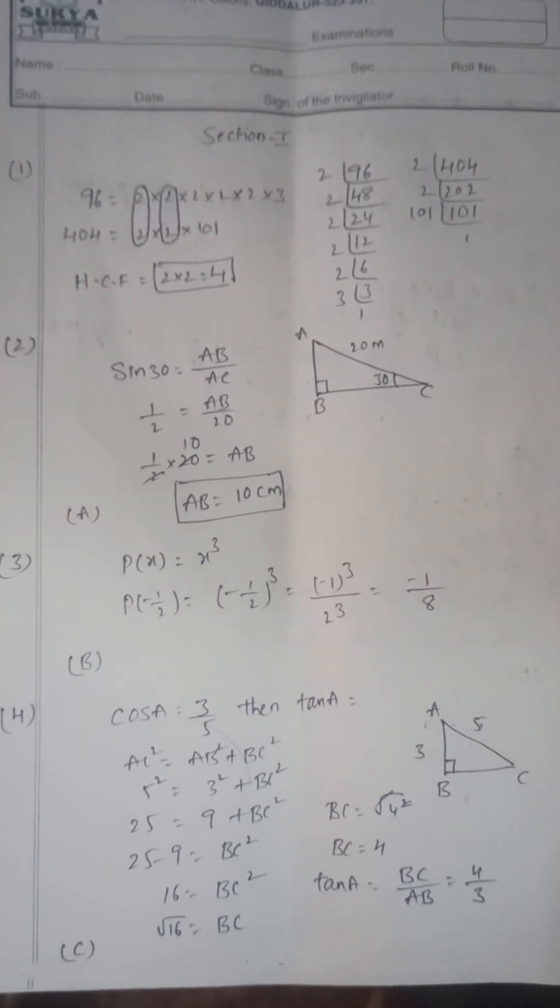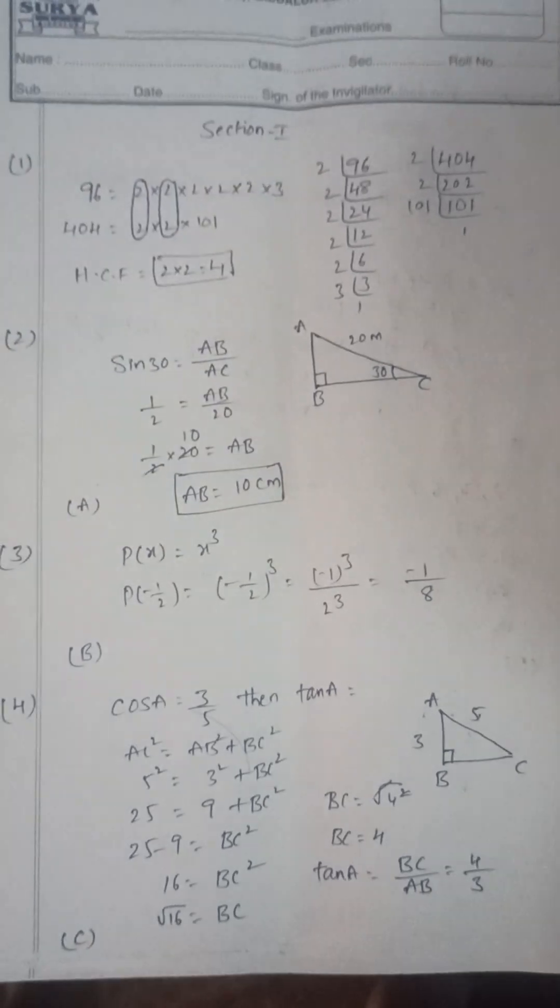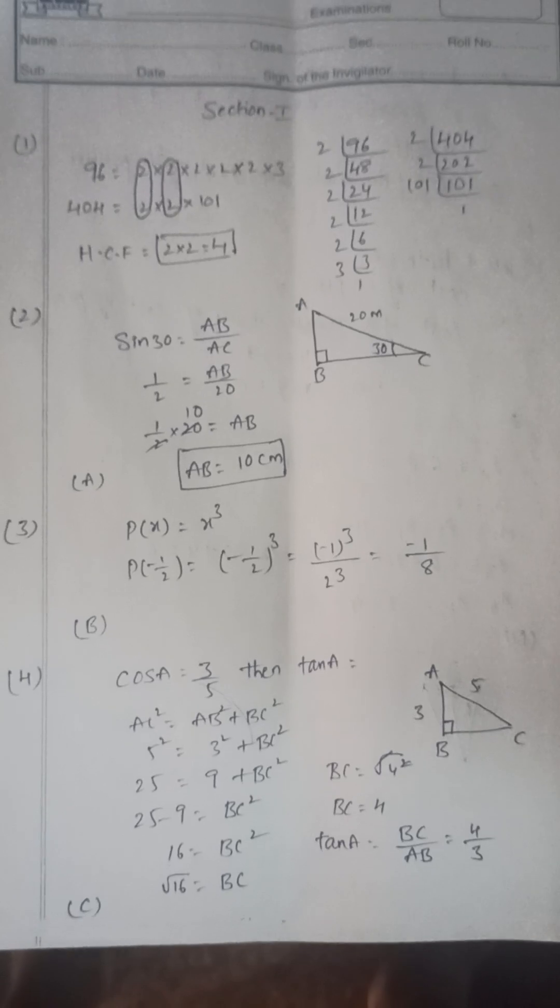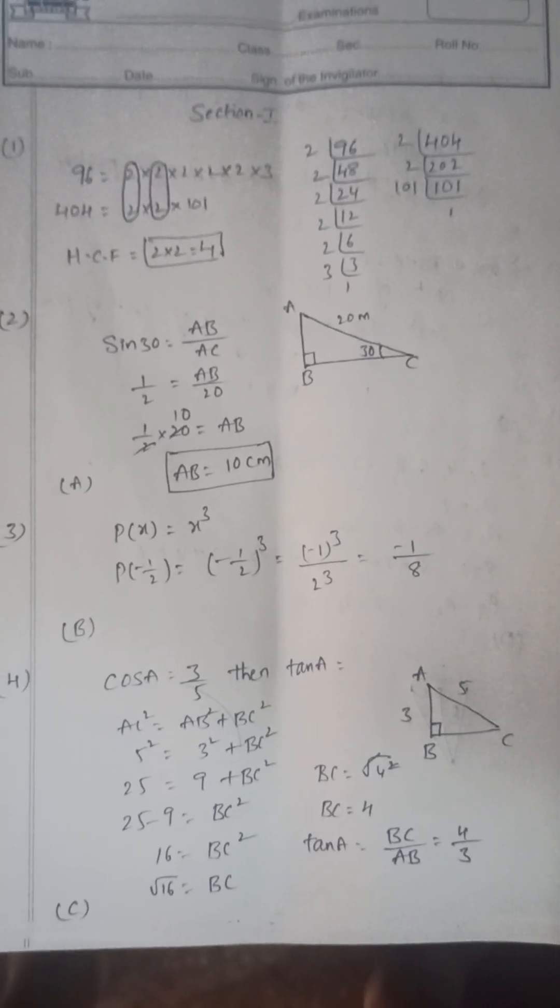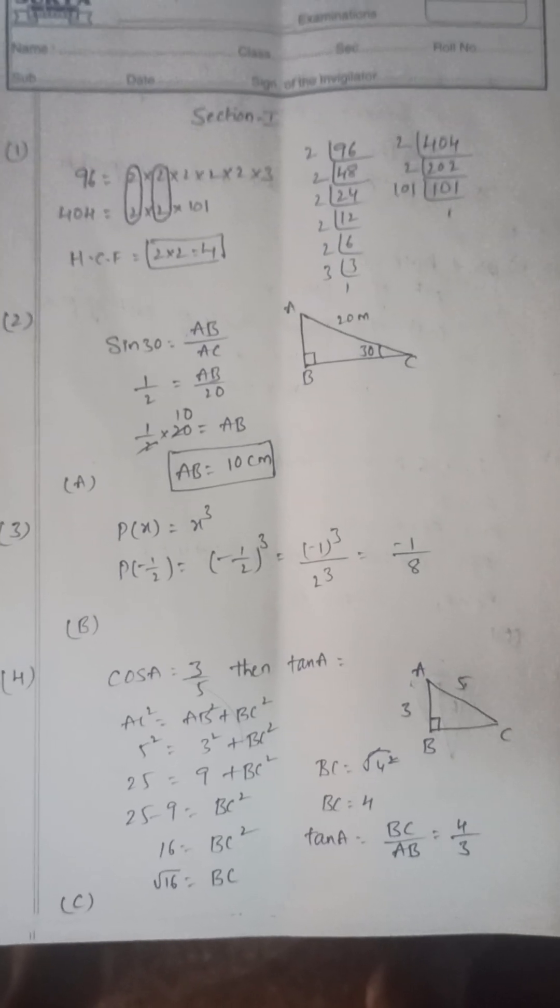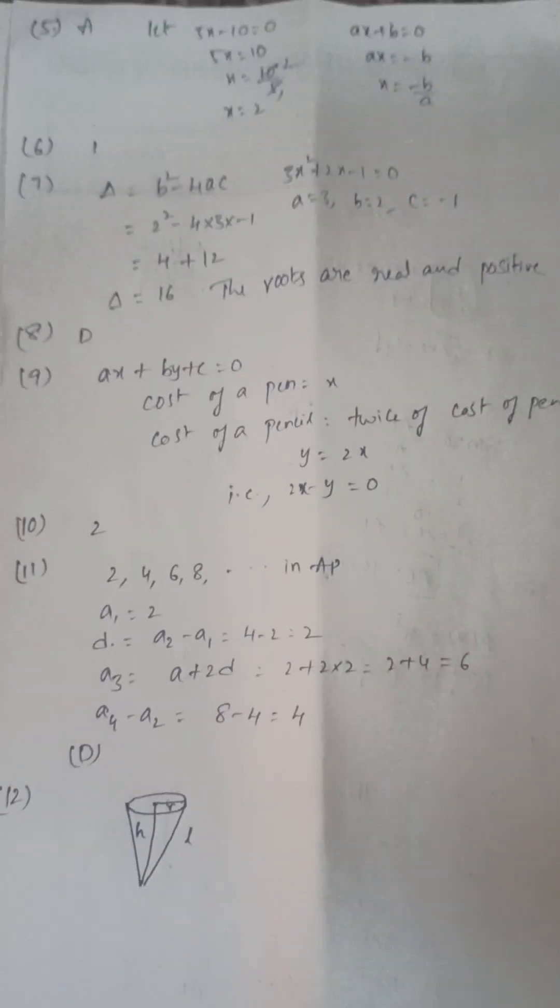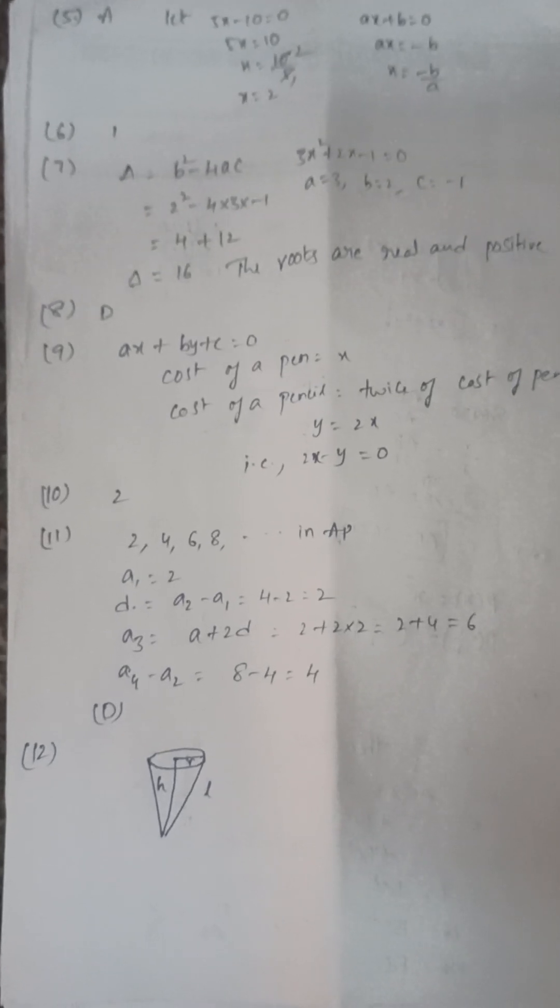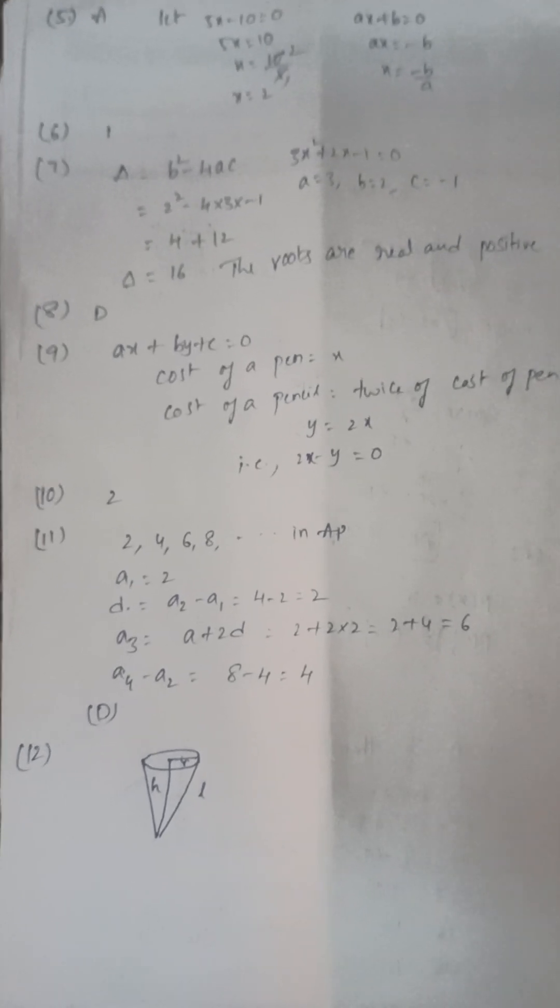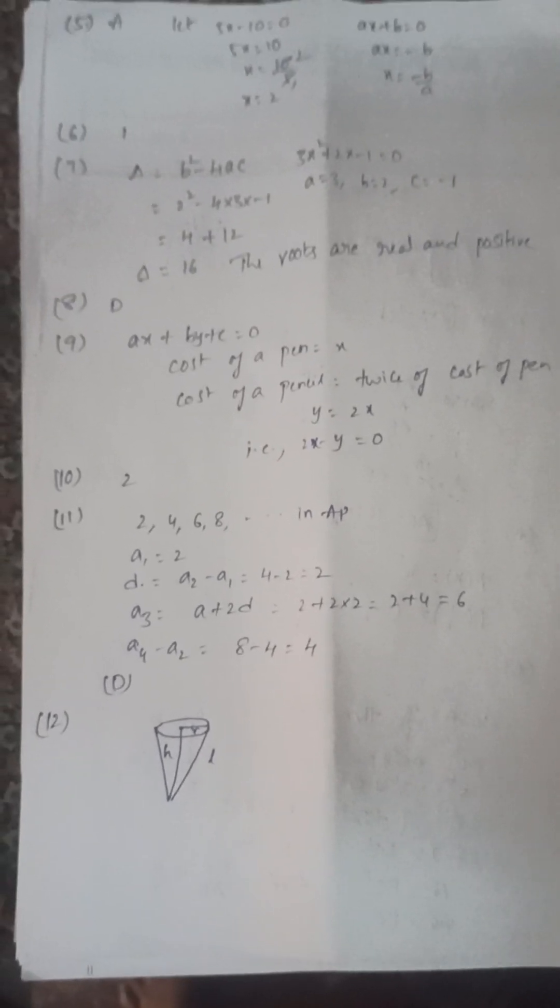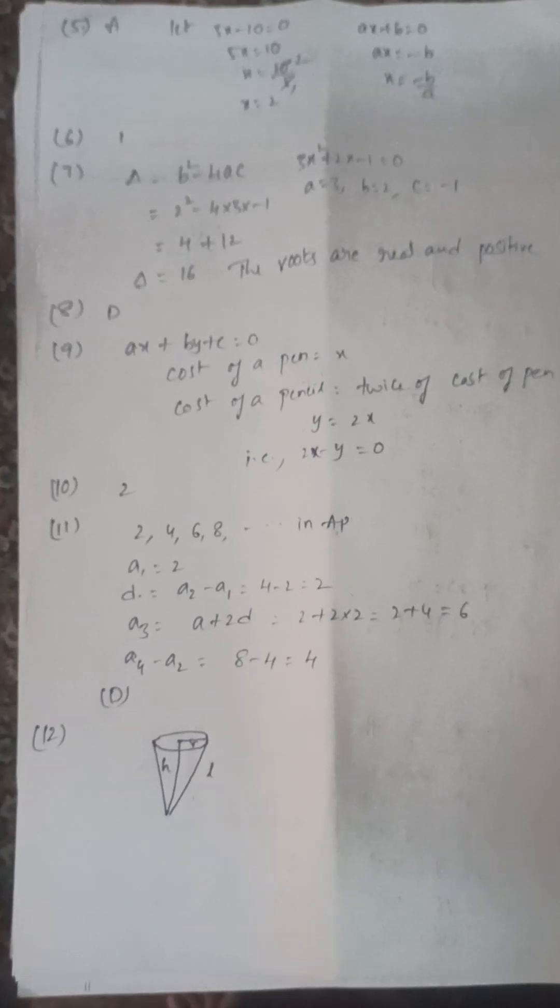Second one: sin 30° equals opposite by hypotenuse, so AB length is 10. Next, third one is minus one by eight. Fourth one, Pythagoras is equal to 4 by 3.